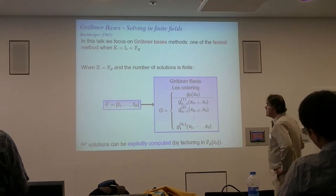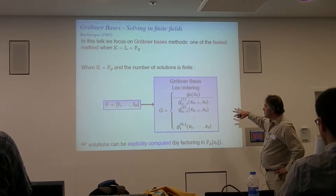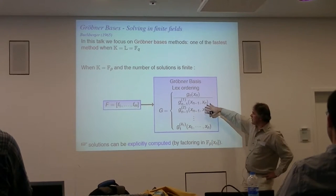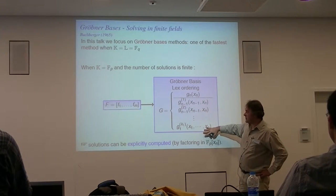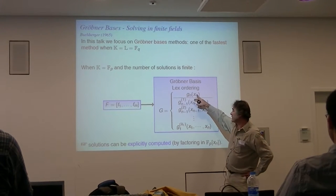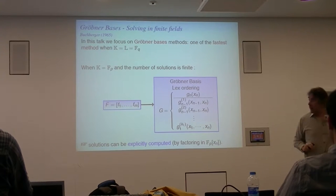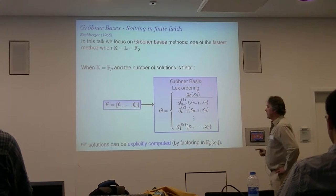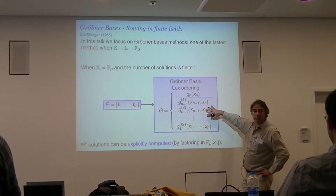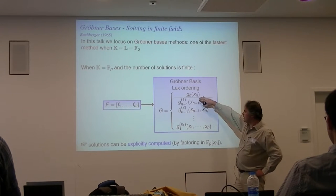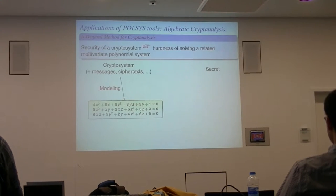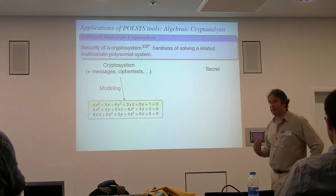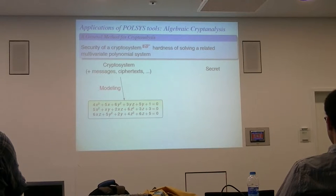Of course I will speak about Gröbner basis. The goal is to start from a system of polynomial equations and at the end obtain something that we can use to really list all the solutions. Most of the time, we will compute the Gröbner basis for lexicographical ordering — we obtain a system of equations such that we have univariate equations and then a triangular shape. If we are able to obtain such an equivalent system, we can solve the system by factorizing the univariate equations.